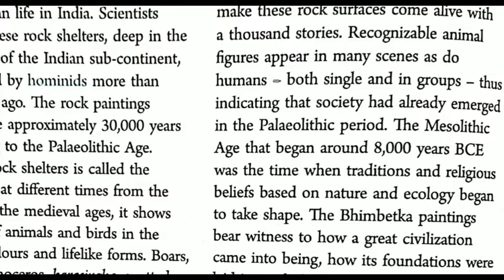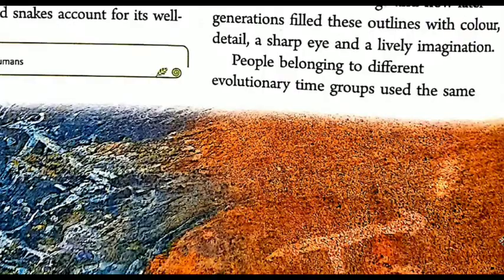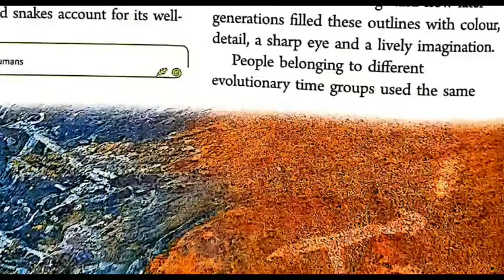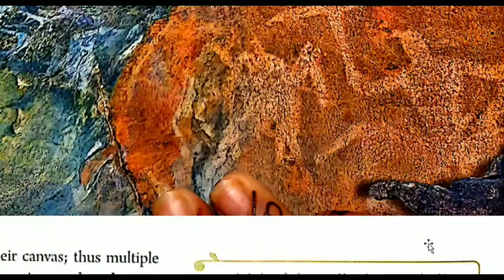The foundations of painting were laid in crude line drawings, and later generations filled these outlines with color. Earlier times, these drawings were made in simple lines — rough lines — because people could not do proper detailed work in that period. Then slowly, as generations moved and developed, the coming generations made proper outlines and added color and detail. With each period and each generation, as civilization developed, the paintings improved.